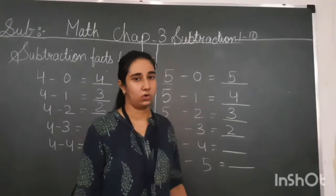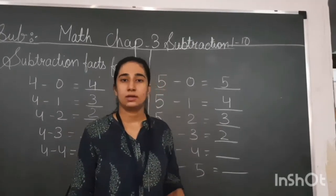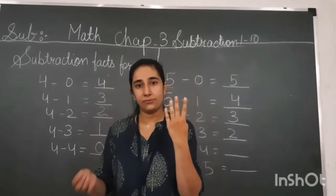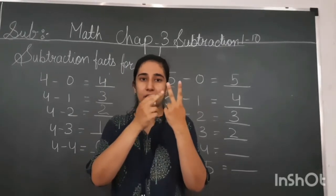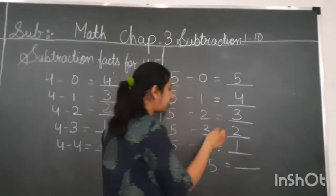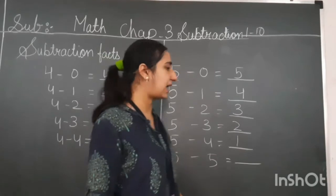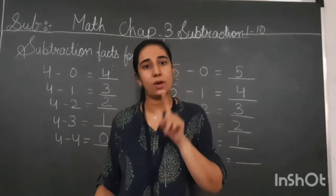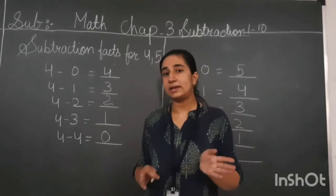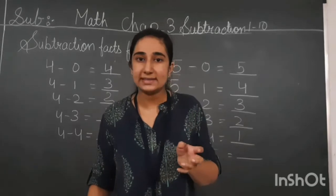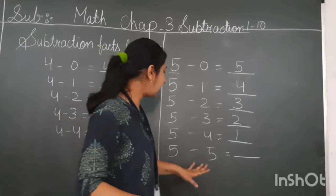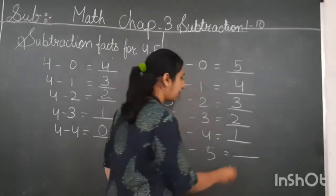Five minus four: keep five in your mind, show four in your fingers, count before five — four, three, two, one. The answer is one. Five minus five: as I told you, when we subtract one from one we get zero, when we subtract two from two we get zero. Same way here, when I subtract five from five, I get zero as the answer.